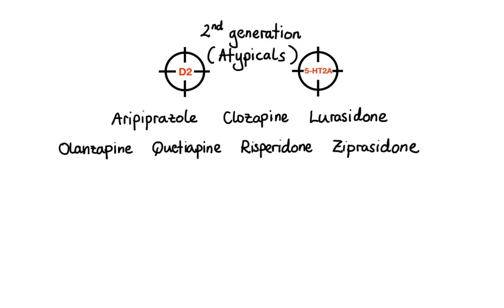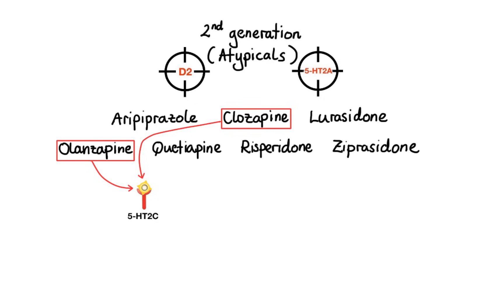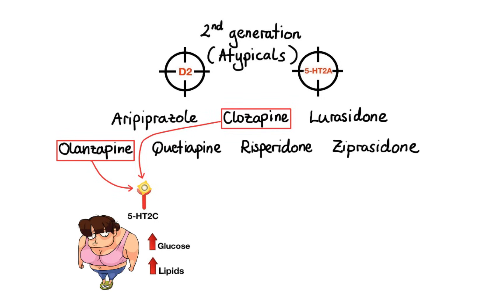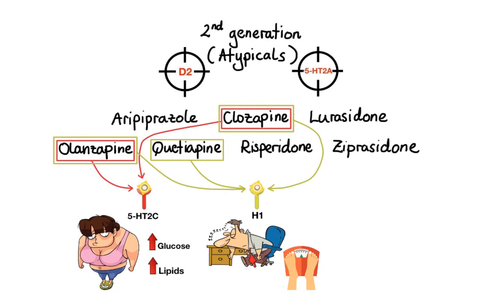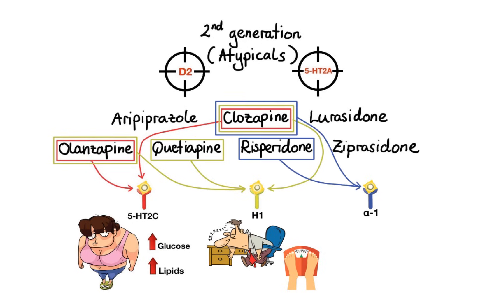For example, atypical antipsychotics that have strong affinity for serotonin receptors subtype 2C, such as clozapine and olanzapine, may cause metabolic side effects including weight gain, hyperglycemia, and dyslipidemia. Agents that have strong affinity for H1 receptors, such as clozapine, olanzapine, and quetiapine, may cause sedation and may also contribute to weight gain. Agents that have significant affinity for alpha-1 adrenergic receptors, such as clozapine and risperidone, may cause orthostatic hypotension.